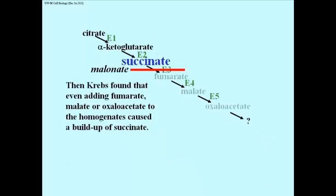Krebs then found something remarkable. If he added fumarate, malate, or oxaloacetate - three of the acids in this pathway that are past succinate dehydrogenase - succinate would accumulate.